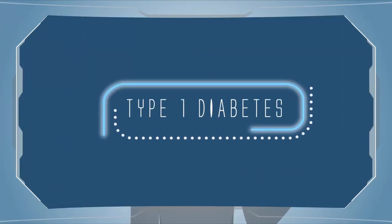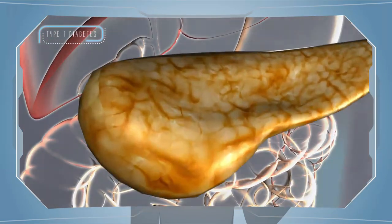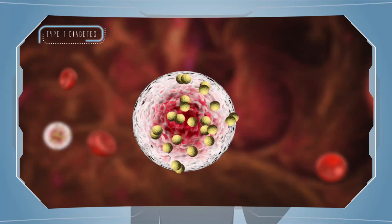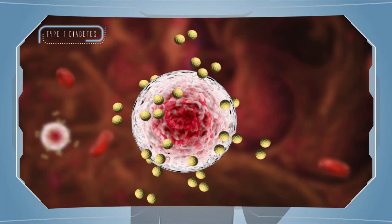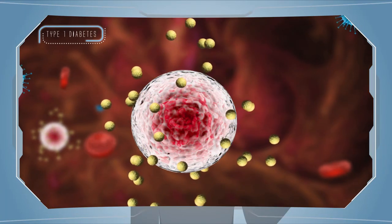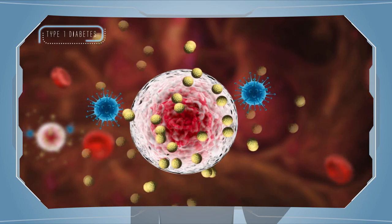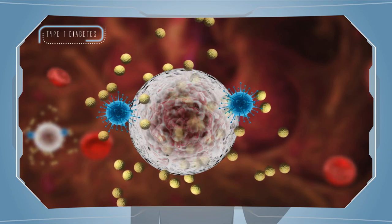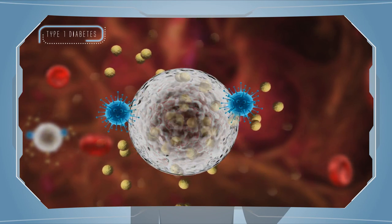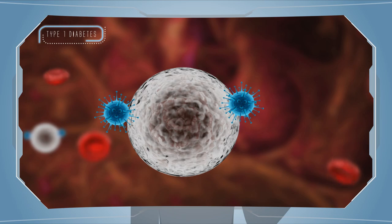Causes for Type 1 Diabetes: It happens when the body's defense system attacks the cells that produce insulin. As a result, the body produces very little or no insulin. The exact causes of this are not yet known, but they are linked to a combination of genetic and environmental conditions.